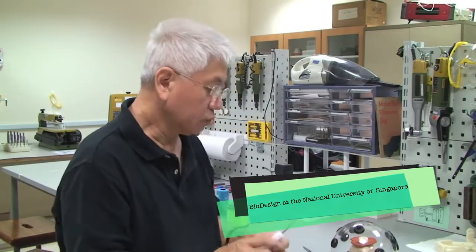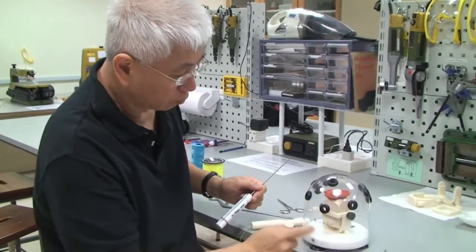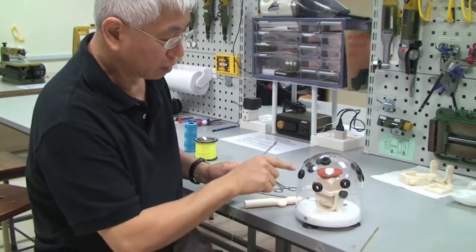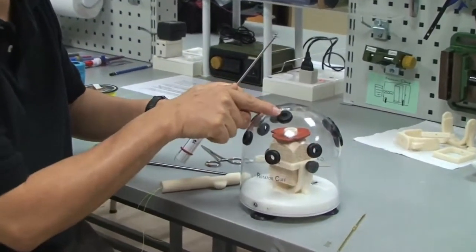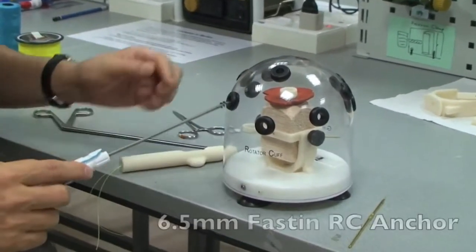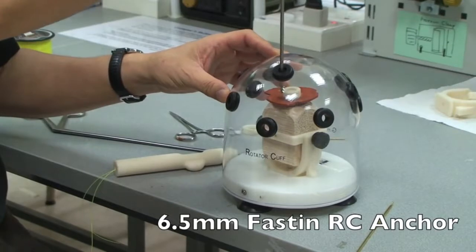So I'm going to use one of these screw-type anchors. If you look at this dome here, it's a rotator cuff. So this is the posterior portal, the lateral portal, the anterior portal, and the superior portal. I'm putting in the anchor through a superior portal, for example.